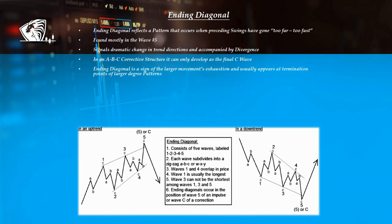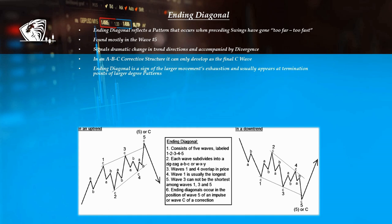The ending diagonal is a pattern that occurs when the preceding move has gone too far too fast, as Eliot put it. This pattern can be found mostly in the fifth wave position at the end of an impulse, and it usually signals dramatic change of price action direction due to the present divergences. It can also be located in an ABC corrective structure, but only in the final C wave. An ending diagonal is indicating exhaustion of the larger movement, hence the reason why it can be found at the termination points of larger patterns. An ending diagonal which is rising is a bearish sign, and one which is declining is a bullish sign.